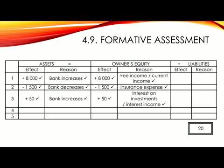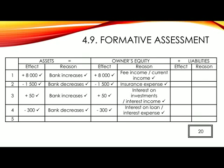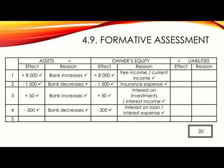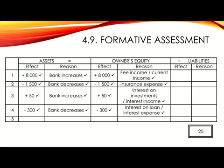Number four: paid interest on the loan. This is similar to number three, except that instead of receiving interest, we are paying it. The two accounts involved will be bank — an asset — and owner's equity, because of interest on the loan. Assets minus 300 (tick), bank decreases (tick). In owner's equity, you will show the other account as interest on loan or as interest expense (tick), and it's minus 300 (tick).